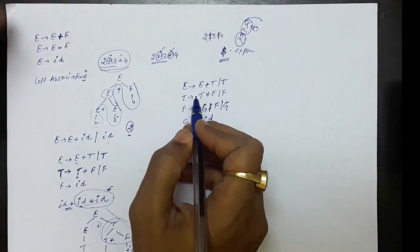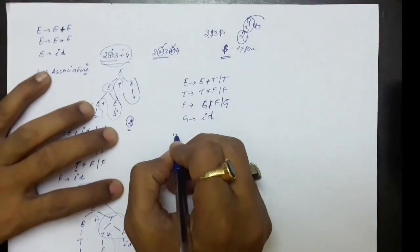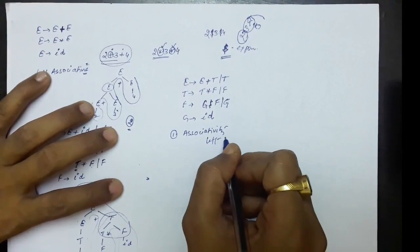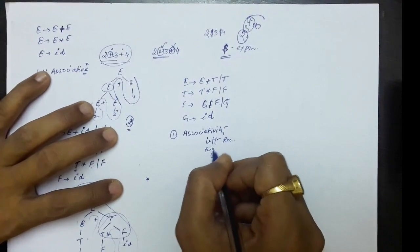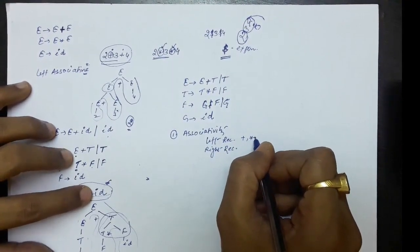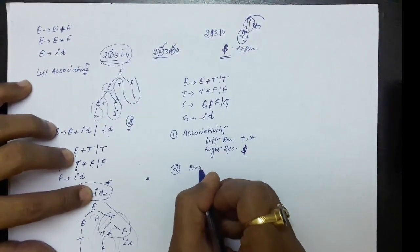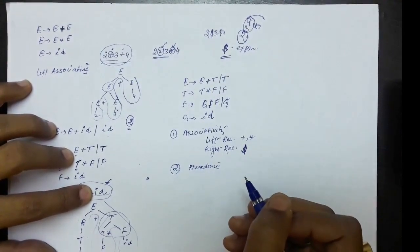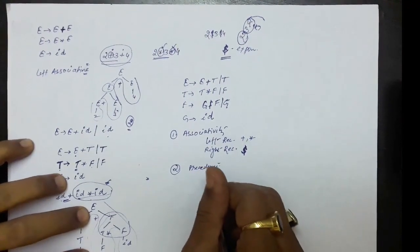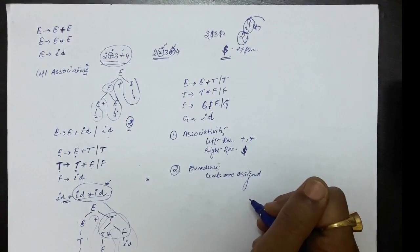So this way we have converted the ambiguous grammar to an unambiguous grammar. There are two rules: one is to provide associativity — if you need left associativity, the grammar should be left recursive; if you need right associativity, write the right recursive grammar. For plus and multiplication we use left recursive productions, and for exponentiation we use right recursive production. For providing precedence, the operator with more precedence is represented at the lower level, and upper level productions have less precedence.